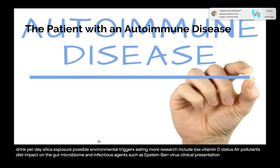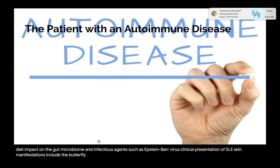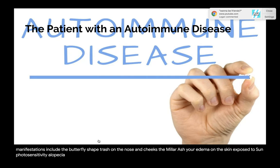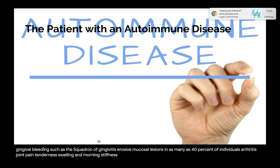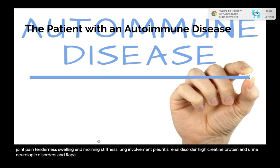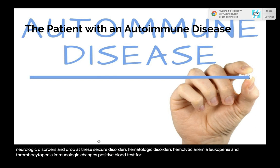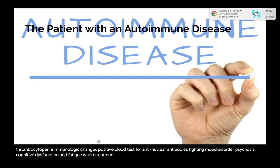Clinical presentation of SLE: skin manifestations include the butterfly-shaped malar rash on the nose and cheeks, erythema on sun-exposed skin, photosensitivity, alopecia, and Raynaud's phenomenon. Oral lesions may include oral discoid lesions, petechiae-like lesions, gingival bleeding such as desquamative gingivitis, and erosive mucosal lesions in up to 40% of individuals. Arthritis with joint pain, tenderness, swelling, and morning stiffness. Lung involvement with pleuritis. Renal disorder. Neurologic disorders including neuropathy and seizure disorders. Hematologic disorders including hemolytic anemia, leukopenia, and thrombocytopenia. Positive antinuclear antibodies. Neuropsychiatric disorders including anxiety, mood disorder, psychosis, cognitive dysfunction, and fatigue.